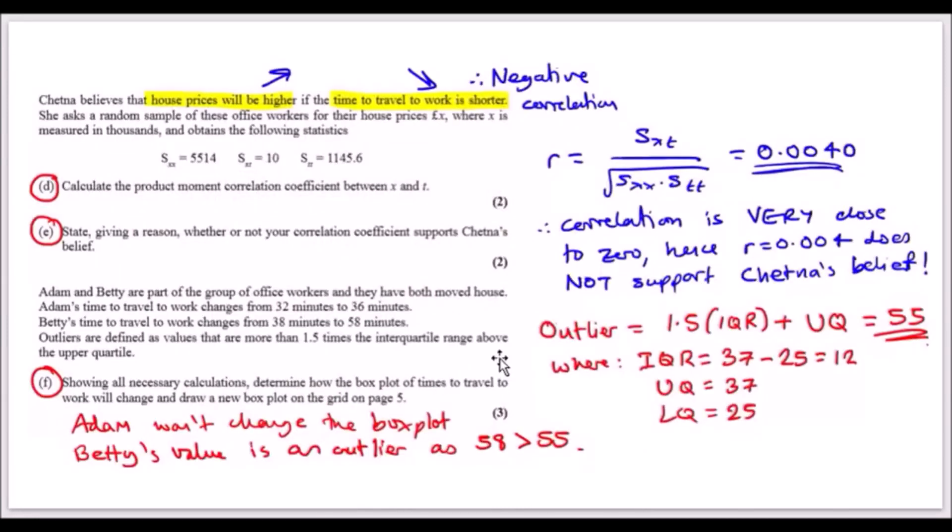Let's look at what Chenna believes. She believes that house prices will be higher if the time to travel to work is shorter. If one goes up and the other goes down, this is a negative correlation—they're inversely related. She asked a random sample of these office workers for their house prices in pounds, where x is measured in thousands. Calculate the r value between x and t, the correlation value. Here's the standard formula: r equals sxt over sxx and stt. Since we've got all the values, just smash it in and you'll realize you have a correlation which is so small, practically zero.